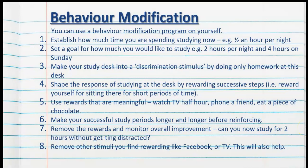Here's an example of using behavior modification to encourage the desired behavior of studying more. You can apply a behavior modification program on yourself. Step one is to establish how much time you are currently spending studying — perhaps it's half an hour per night and you want to increase that to two hours per night. Set a goal, such as two hours per night and four hours on Sunday. Make sure that your study desk is in discrimination stimulus mode, meaning you only do homework at that desk, so you subconsciously associate that space with homework only.